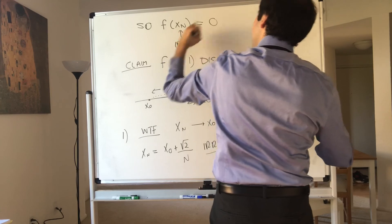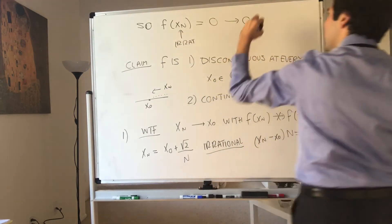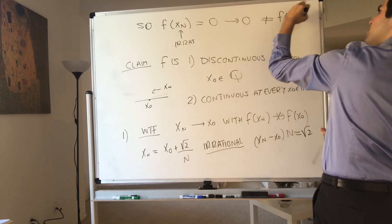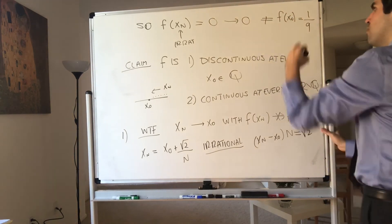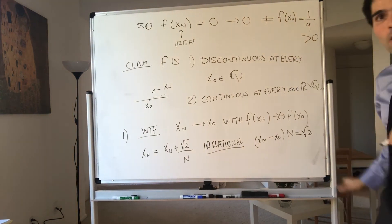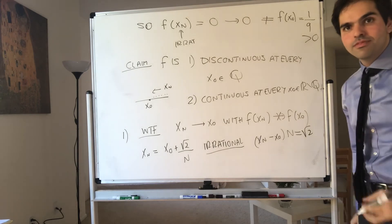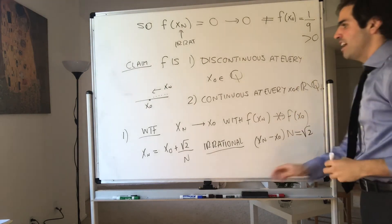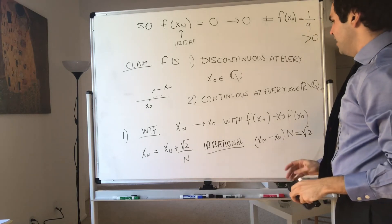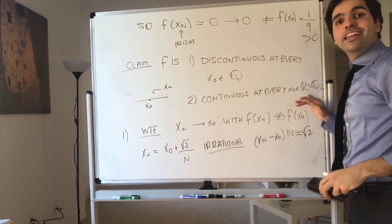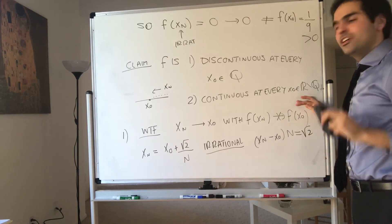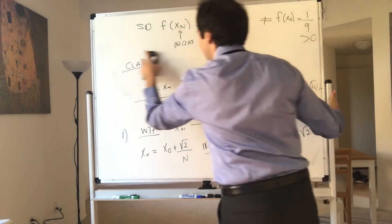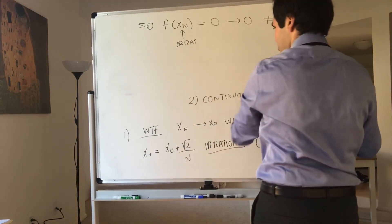Well, 0 converges to 0, but this is definitely not f of x-naught, because f of x-naught is 1 over something and therefore positive. This is why the function is discontinuous at every rational number. Now let's show the slightly harder thing — let's show that it's continuous at every irrational number.